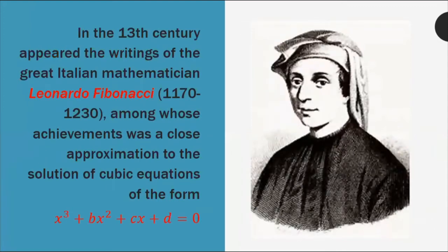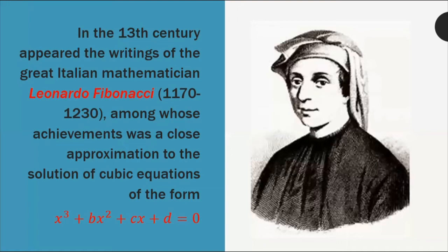In the thirteenth century, the writings of great Italian mathematician Leonardo Fibonacci, 1170 to 1230, appeared. Among his achievements was a close approximation to the solution of the cubic equation of the form x cubed plus bx squared plus cx plus d equals zero — the highest exponent being the third degree. But like those before him — Abu Kamil and Omar Khayyam — there was still no exact formula for finding the roots or the solution.